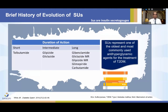When we look at sulfonylureas from the perspective of duration of action: short-acting — tolbutamide, no longer used; intermediate-acting — glipizide and gliclazide; and long-acting — glibenclamide, gliclazide MR, and glimipride.